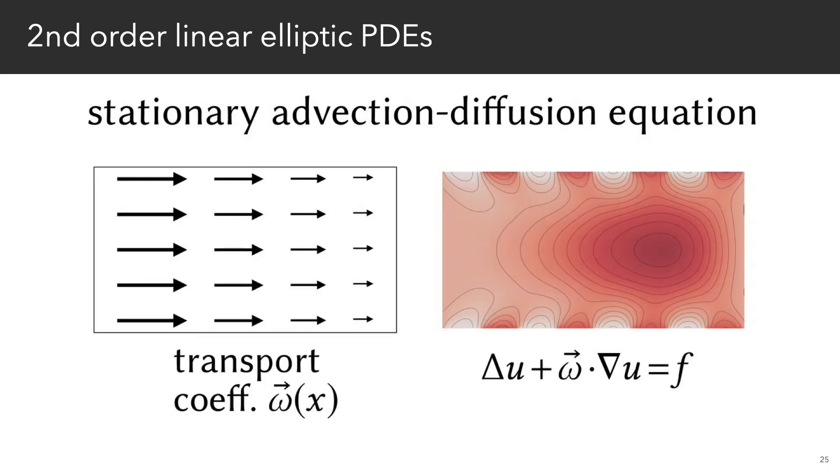Adding a drift term omega grad u to a Poisson equation indicates that heat is being pushed along some vector field omega. Imagine a flowing river, which mixes hot water into cold water until it reaches a steady state.